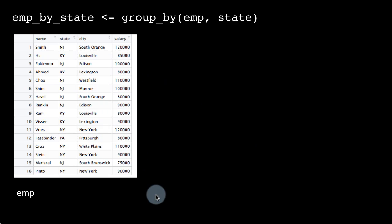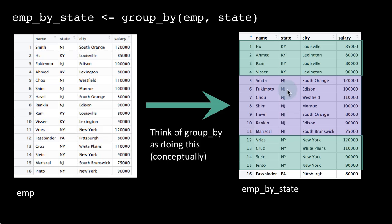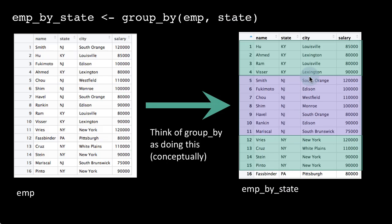Of course, the result — this is emp itself. When you did emp_by_state, visually think of it as if the rows for each state got pulled together. In reality, this is not how it's going to look, but conceptually think that when you grouped it by state, all the rows for a particular state got pulled together. The first four rows all belong to Kentucky, the remaining seven rows belong to New Jersey, etc. I'm emphasizing this is only conceptual — if you really looked at emp_by_state, you will not see the data looking like this. Instead, the data will look pretty much like before, but that table will actually have additional information.